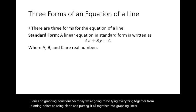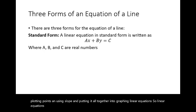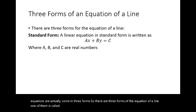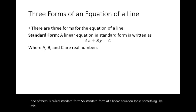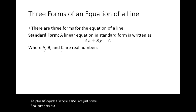Linear equations come in three forms. The first is called standard form. Standard form of a linear equation looks like this: ax plus by equals c, where a, b, and c are real numbers. The key with standard form is that x and y are both on the same side of the equal sign.